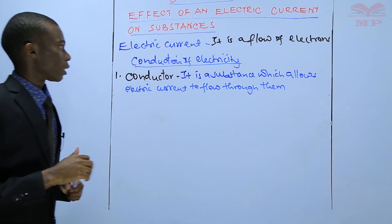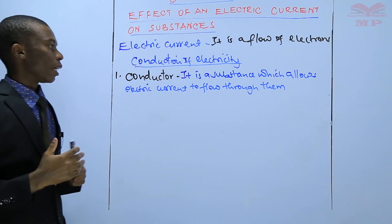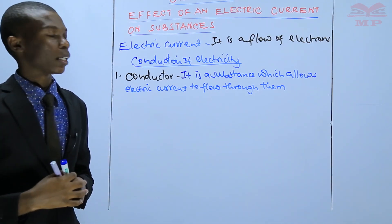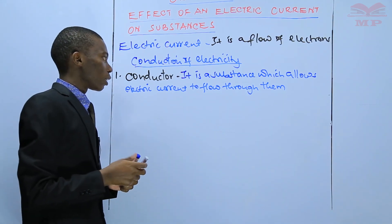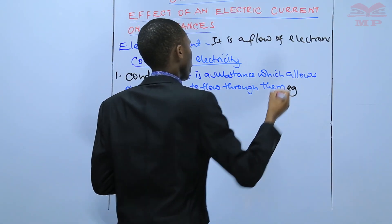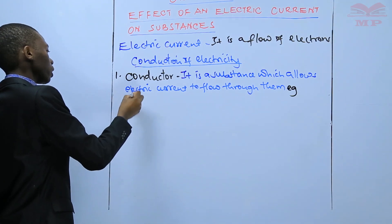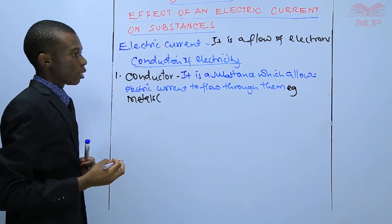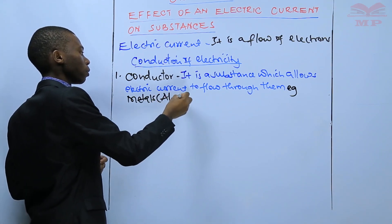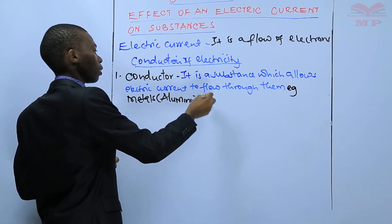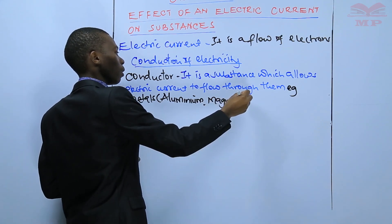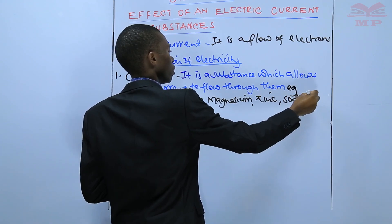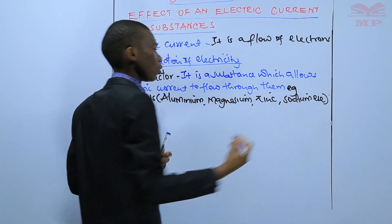A conductor is a substance which allows electric current to flow through it. We will give examples — there are so many examples. These examples include metals like aluminium, magnesium, zinc, and sodium. There are so many metals.